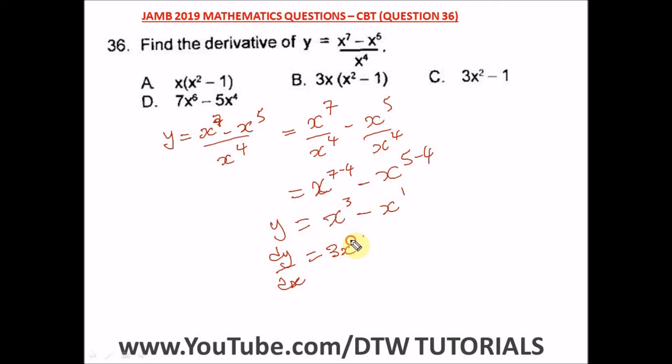So here we have 3x squared minus what? 1 times this will be 1. And when you subtract 1 from the coefficient, we're going to get 0, and x raised to the power 0 is still 1. So 1 times 1 will still be 1, so we can leave this 1 down here.